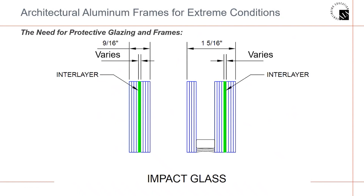Usually in entries, your glass is going to drop down to 9-16 with a 0.90 interlayer. An insulated glass is usually 1-5-16 with a quarter-inch outboard light of glass, half-inch airspace, then 9-16 for the inward light. The outboard light of the glass needs to be tempered as required by code. Small missile impact does require that the outboard lights are fully tempered in all locations.